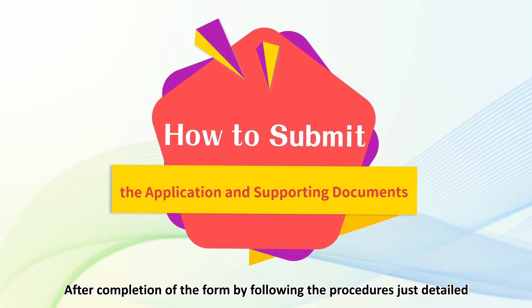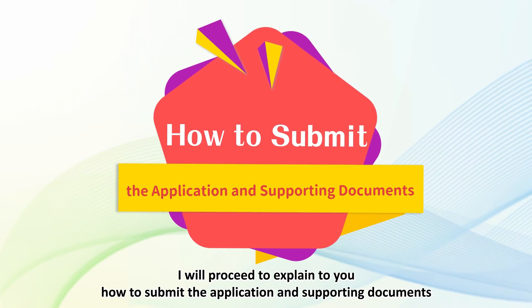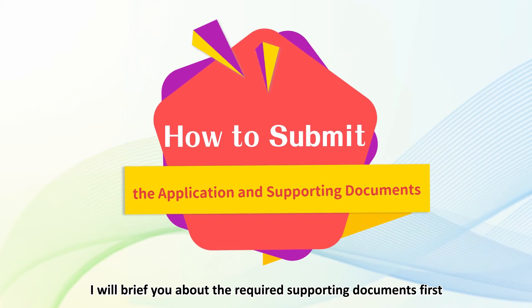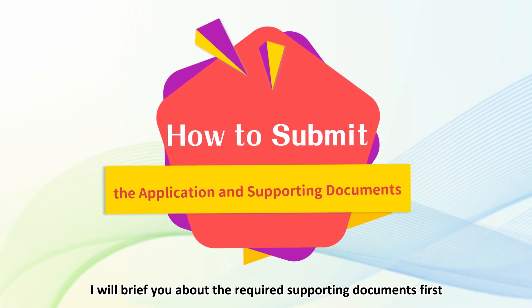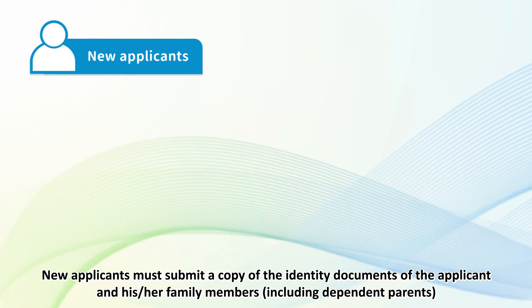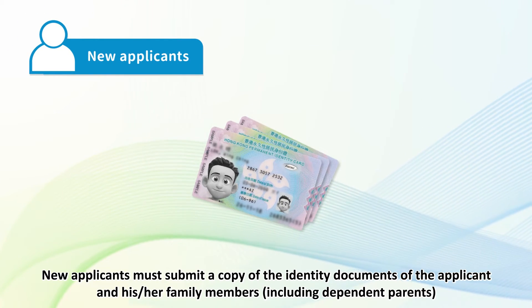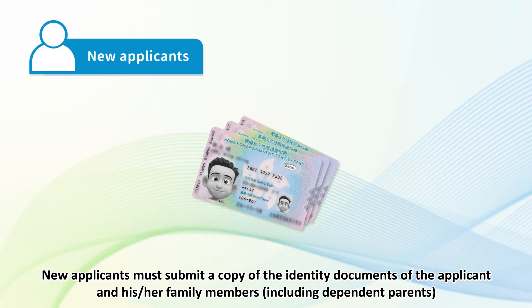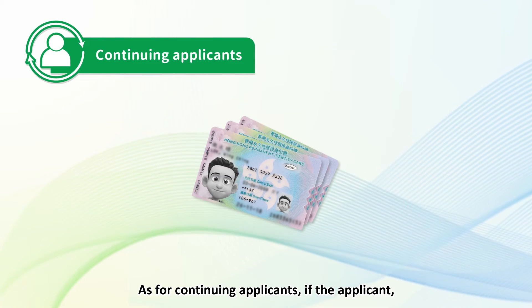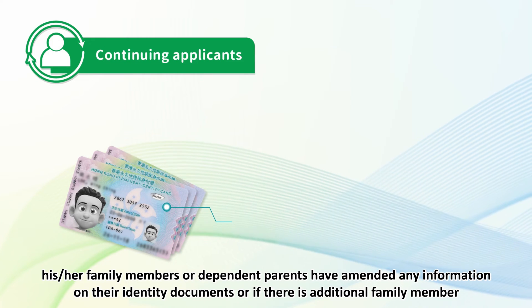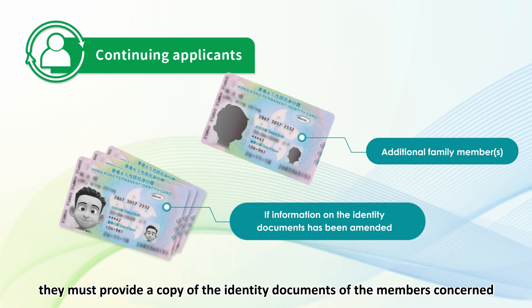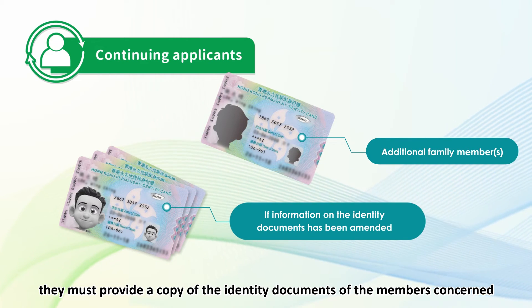After completing the form, I will proceed to explain how to submit the application and supporting documents. The first required supporting document is the identity document. New applicants must submit a copy of the identity documents of the applicant and his or her family members, including dependent parents. As for continuing applicants, if the applicant, his or her family members, or dependent parents have amended any information on their identity documents, or if there is an additional family member, they must provide a copy of the identity documents of the members concerned.